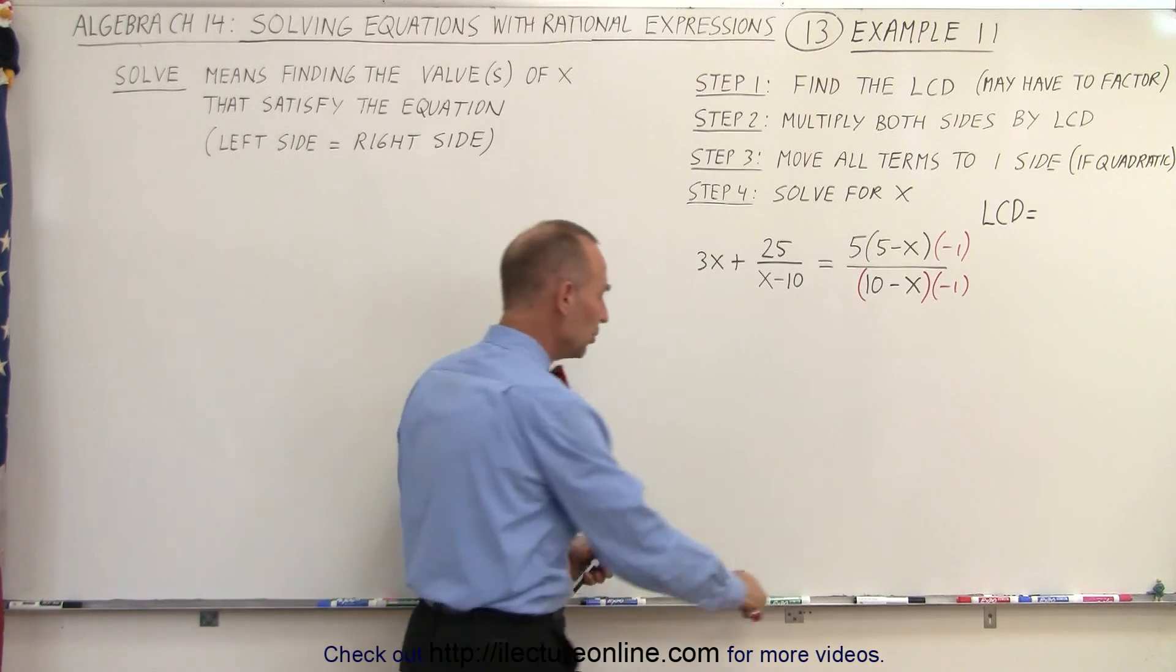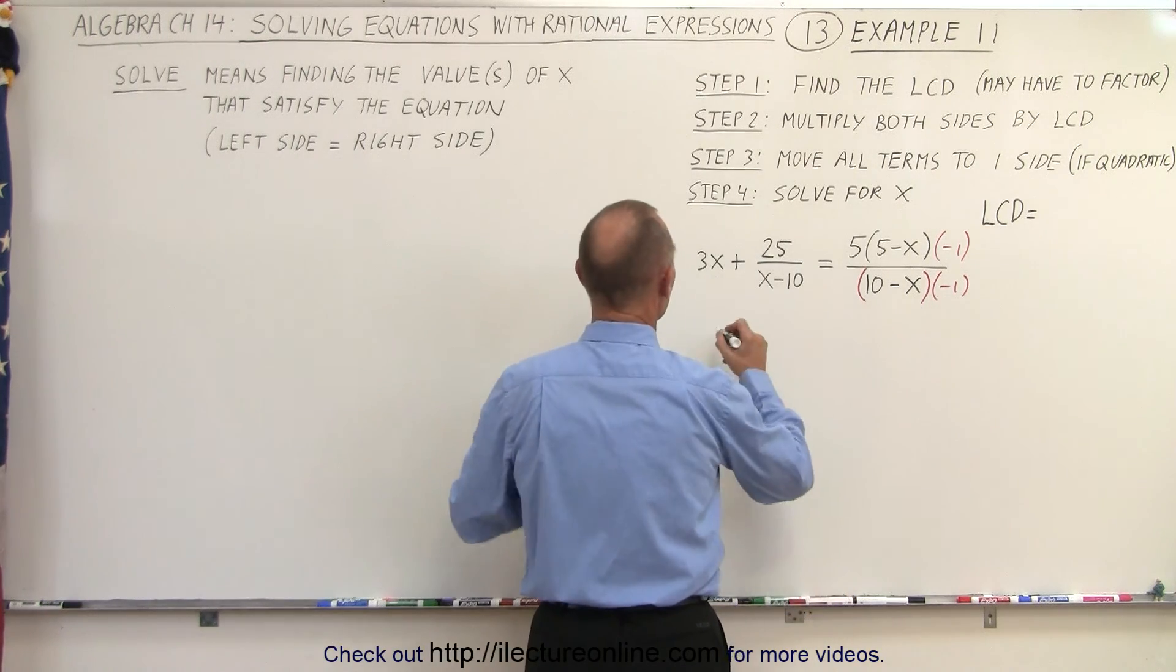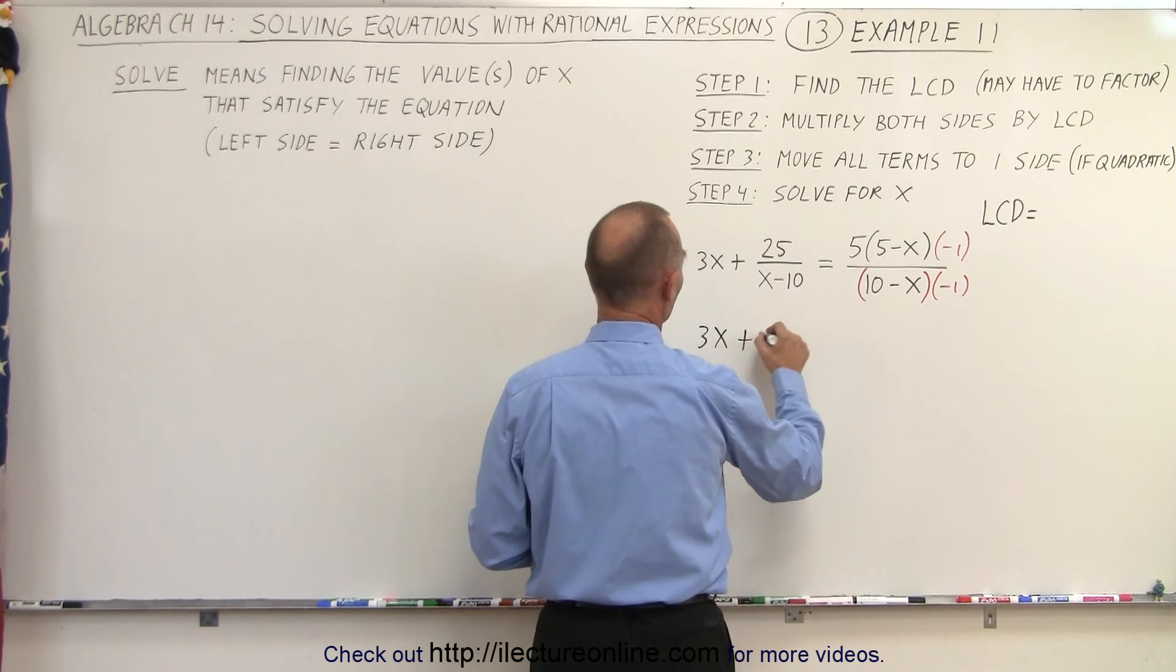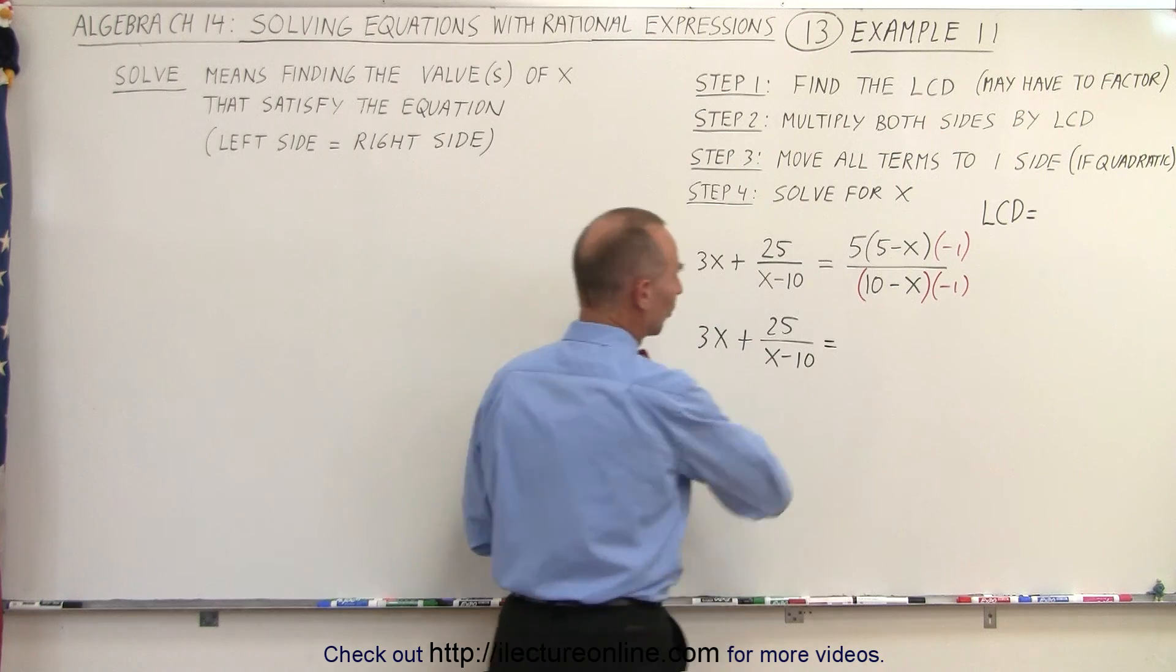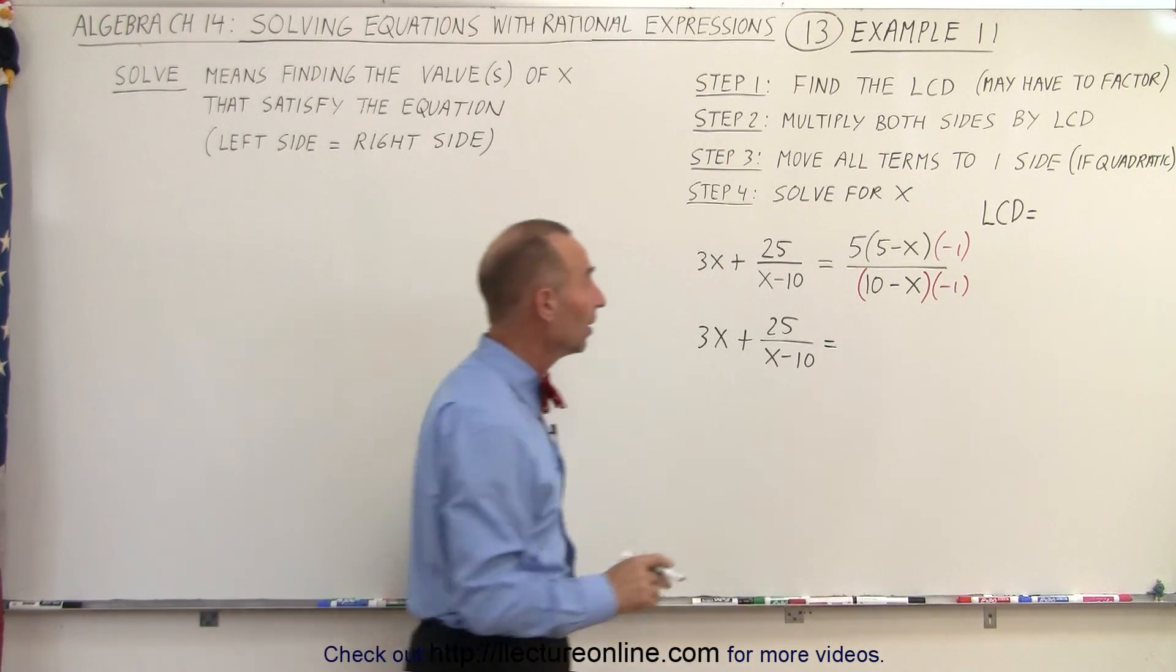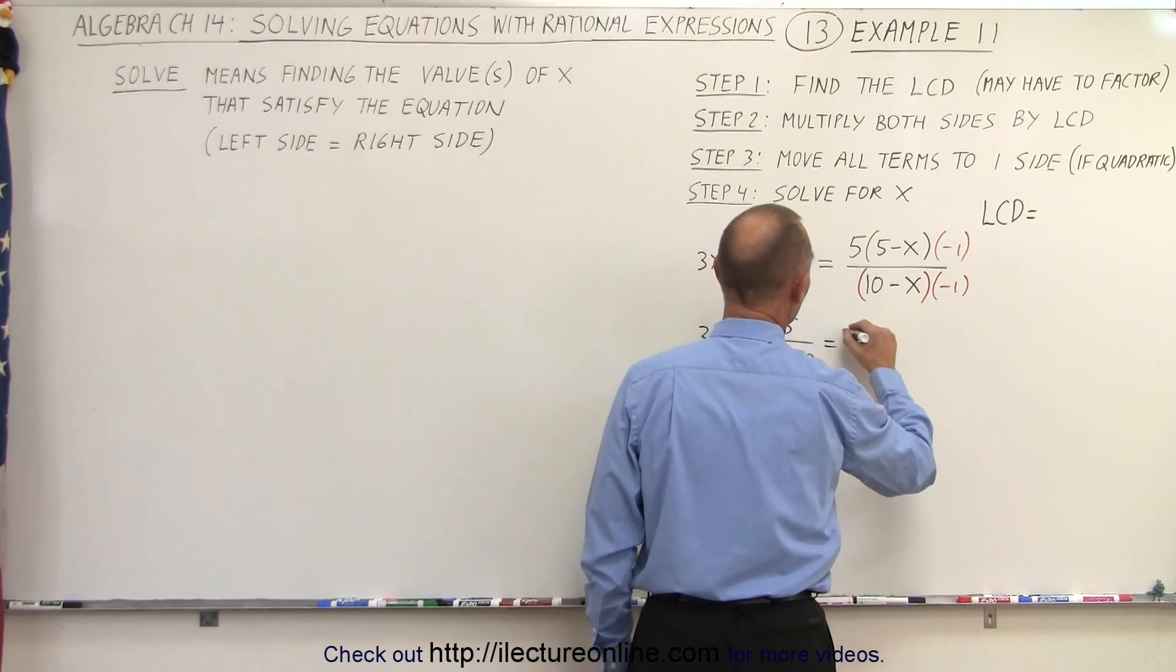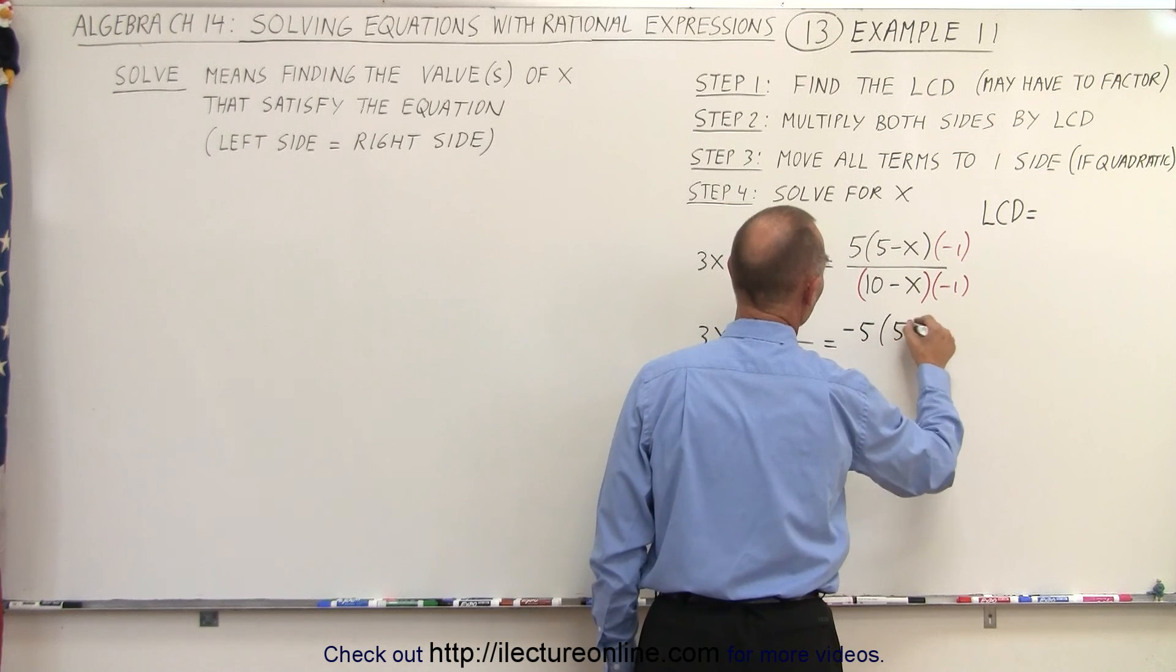Let's see what happens when we do that. Here we end up with 3x plus 25 over x minus 10. That hasn't changed, but on the right side,